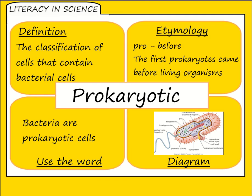Prokaryotic is the classification of cells that includes bacterial cells. 'Pro' means 'before,' so the first prokaryotes came before other living organisms. When you look at classification in Year 11, you'll cover three domains: the archaea, the eukaryota, and the prokaryota — which is what bacterial cells really are. Bacterial cells came first and are much smaller than eukaryotic cells, which is important to remember.